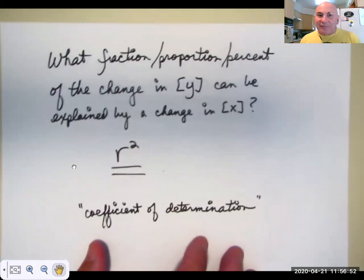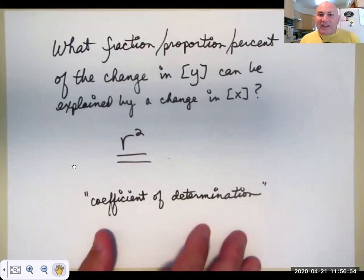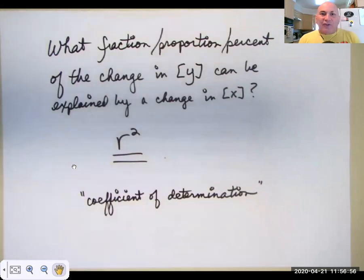The big lesson I want you to get out of today is the answer to this question. When you see a problem that says what fraction or what percent or what proportion of a change in this variable can be explained by a change in that variable. The answer is always R squared for our purposes. That's really what you need to get out of today.